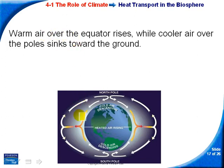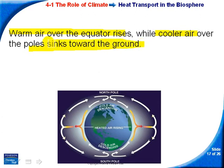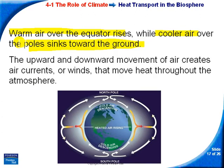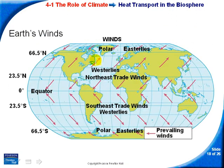As air gets heated at the equator, it rises and circulates toward the poles where it cools and descends. Warm air over the equator rises; cooler air over the poles sinks toward the ground. This movement creates air currents, or winds. These winds move not only up and down but also north, south, east, and west. In North America, our prevailing winds basically run west to east, which is why I always think of our weather as coming from the west.